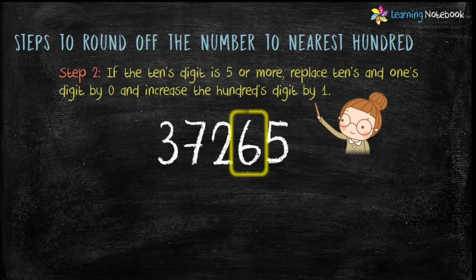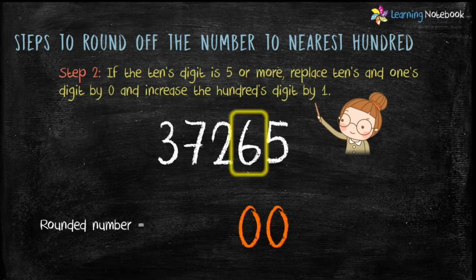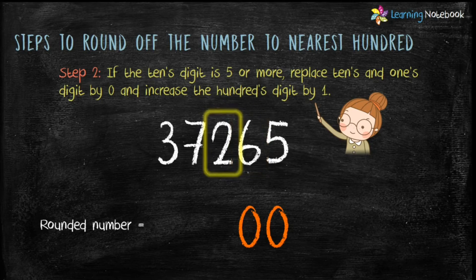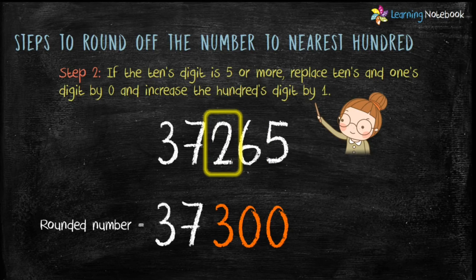Let's take another example. Here the tens digit is 6, which is greater than 5. So first replace 6 and 5 by 0, then increase the hundreds digit, which is 2, by 1 — 2 plus 1 equals 3. Keep the remaining digits as they are. Therefore the rounded number is 37300.